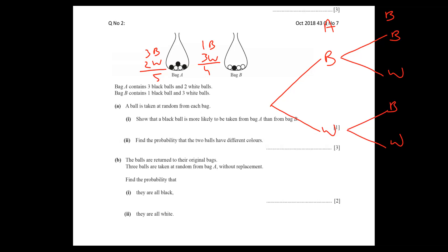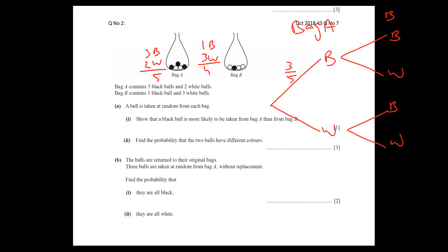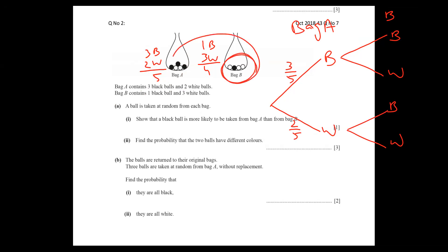Let me write the probabilities so you can understand easily. The chance of black from Bag A is three out of five, and the chance of white from Bag A is two out of five. This diagram will help for both parts. Now for Bag B — there is no connection between Bag A and Bag B, so they are independent.